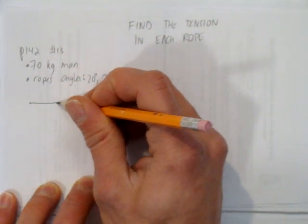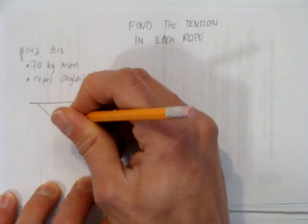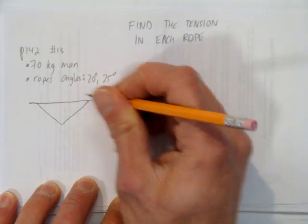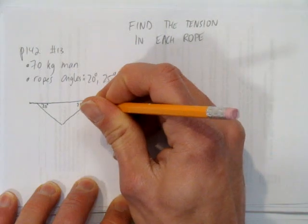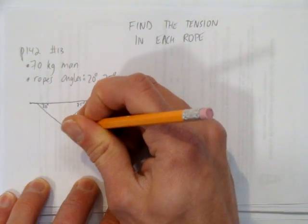So we'll begin by drawing a sketch. The first angle here is 20 degrees. The second angle here is 25. And there's a force pulling the man down.